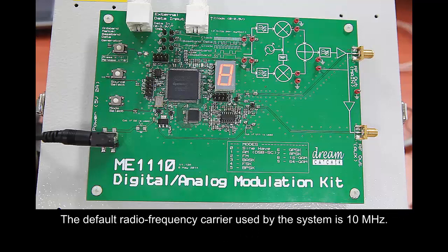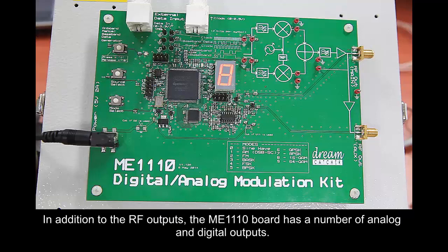The default radio frequency carrier used by the system is 10 MHz. In addition to the RF outputs, the ME1110 board has a number of analog and digital outputs.